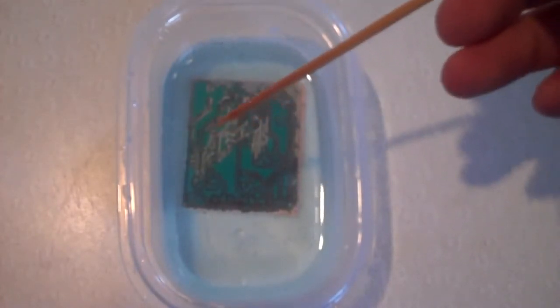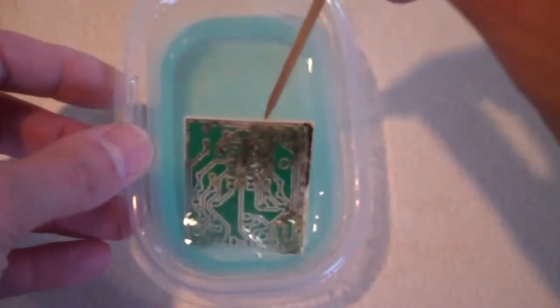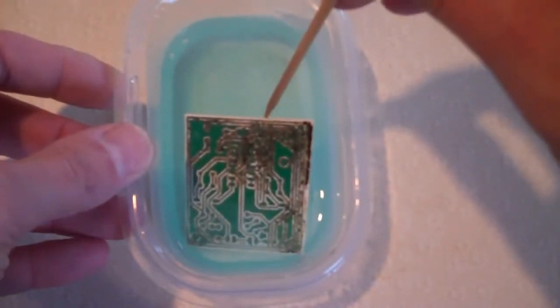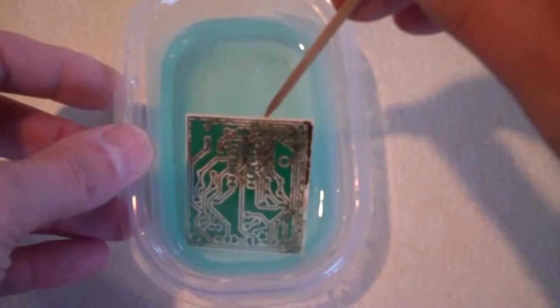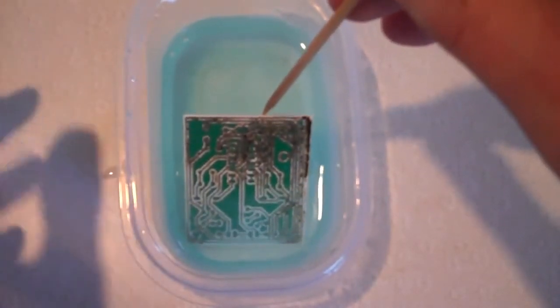Here you can see we're almost through to the board. One thing I've noticed: if the reaction slows down, you can just sprinkle salt over the surface of the board, let it sink through the liquid, and that starts the whole reaction up again.